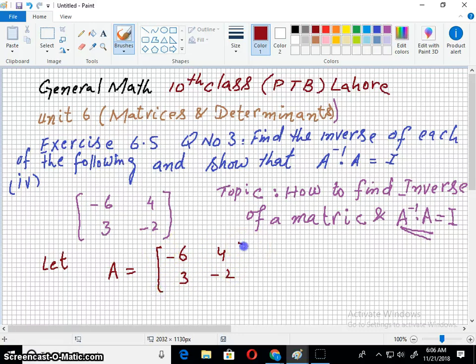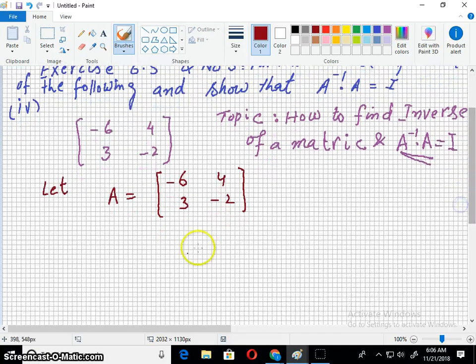Now I will find its modulus or determinant, which is written like this. In finding the determinant we multiply the elements in the diagonal and put a negative sign in between.